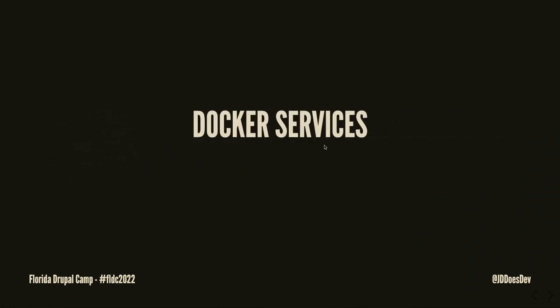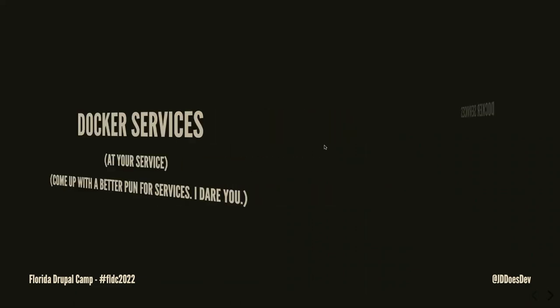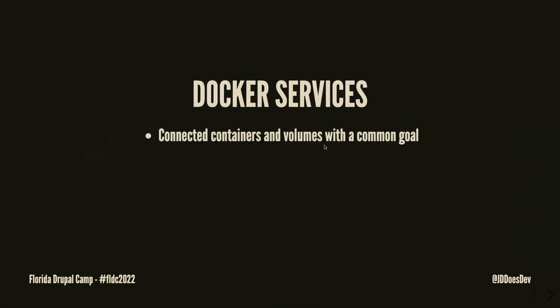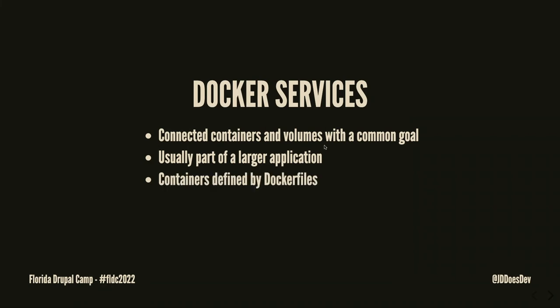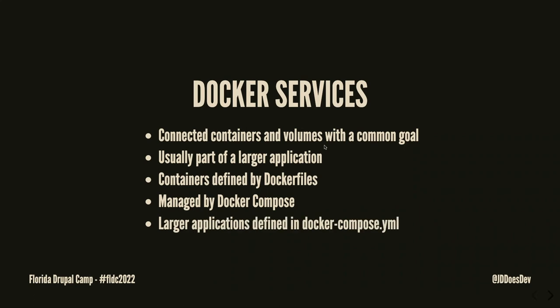Next up: Docker services. Docker services are connected containers with a common goal. A single service is a single container, but it works with other services to form an application. Several services can be used for a single application, and each service is defined by a Dockerfile. Those Dockerfiles are orchestrated with Docker Compose, which is a utility that orchestrates an entire application rather than just a single container at a time. These are defined in a docker-compose.yaml file.